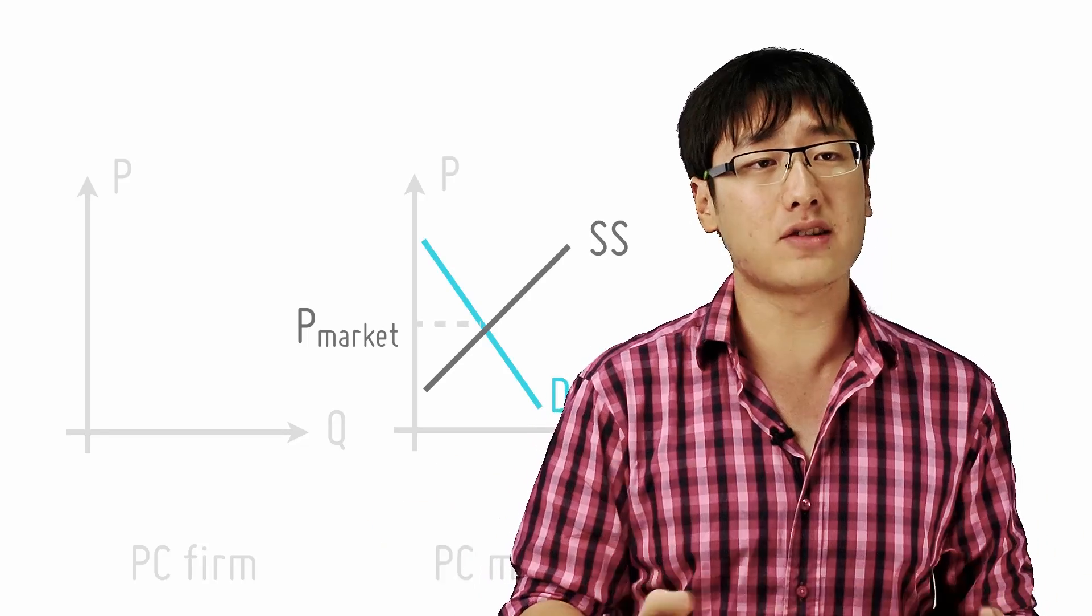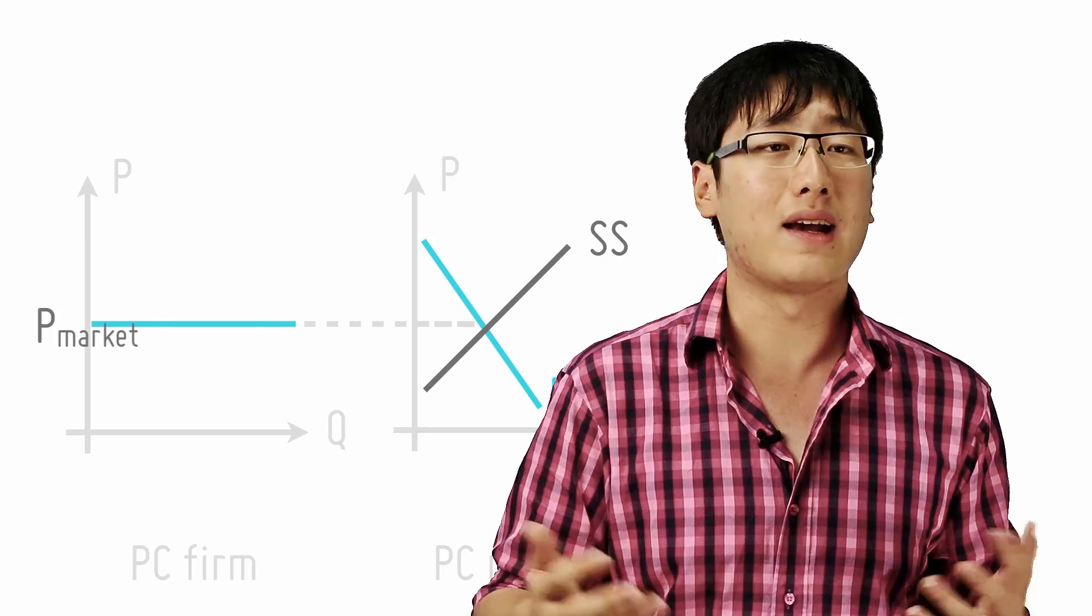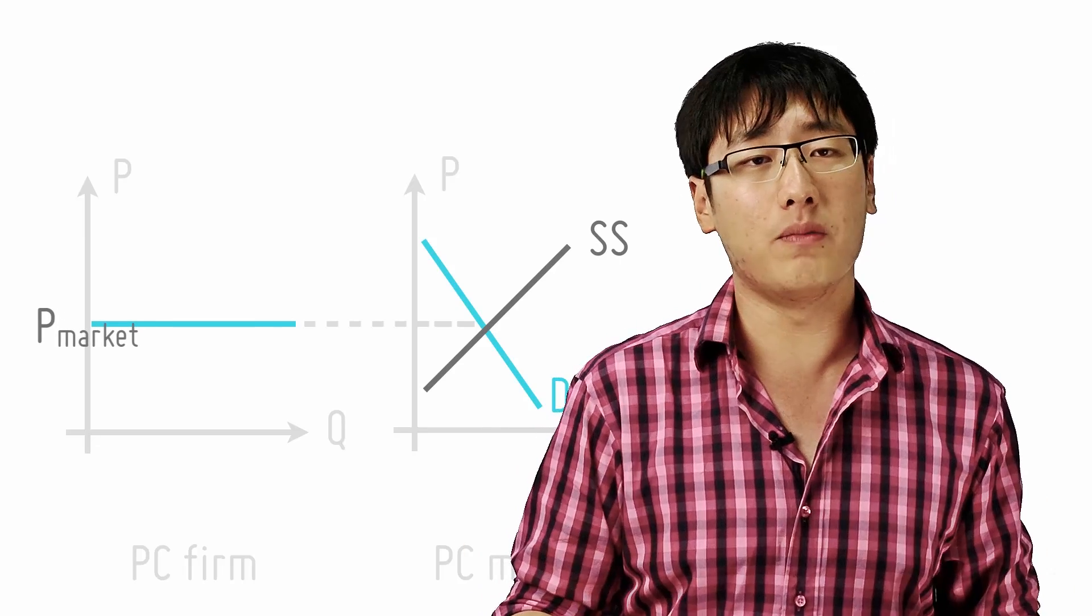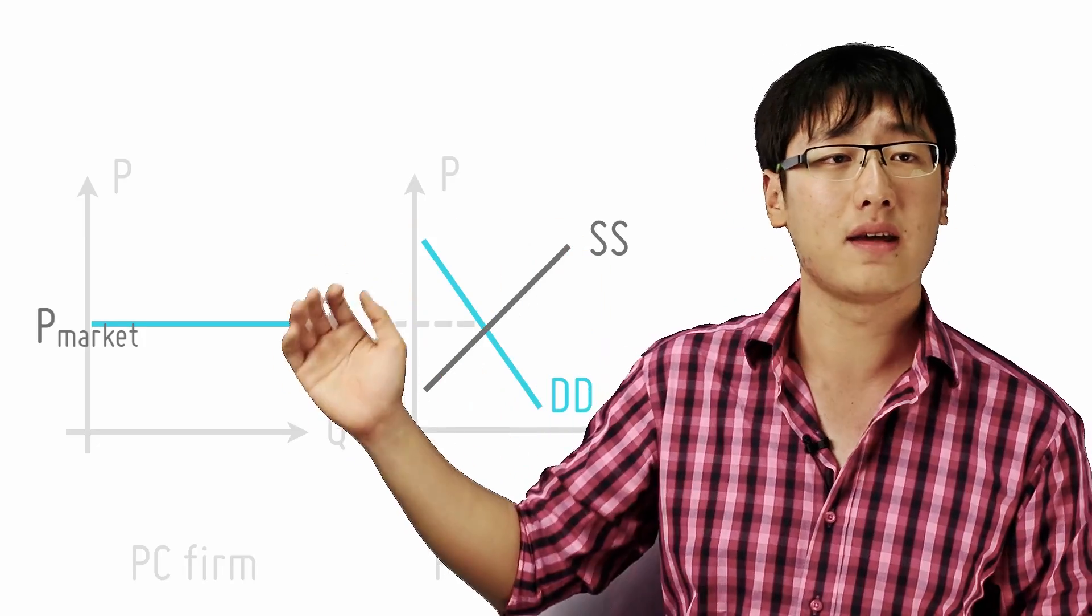So the firm faces a horizontal demand curve at this price and we have already explained why it can't sell above or below. It can sell all it produces at the market price P but nothing above.